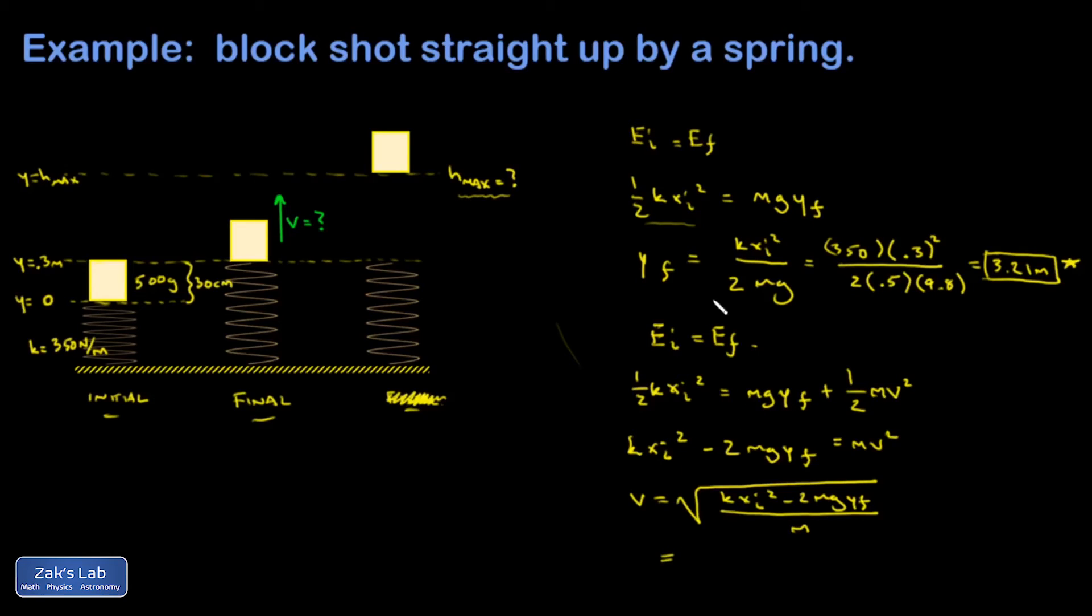So it's so important on this particular one to not accidentally neglect the gravitational potential energy. This block is higher than it used to be. So there was an increase in gravitational potential energy. Some of the spring potential goes into that, and the rest goes into the kinetic system.